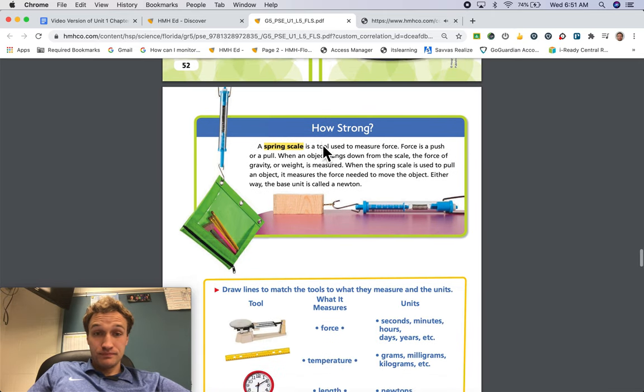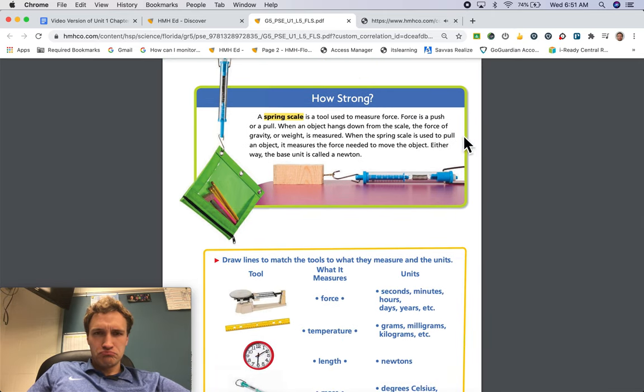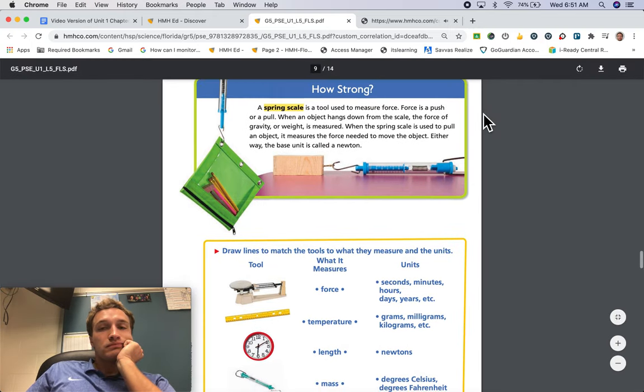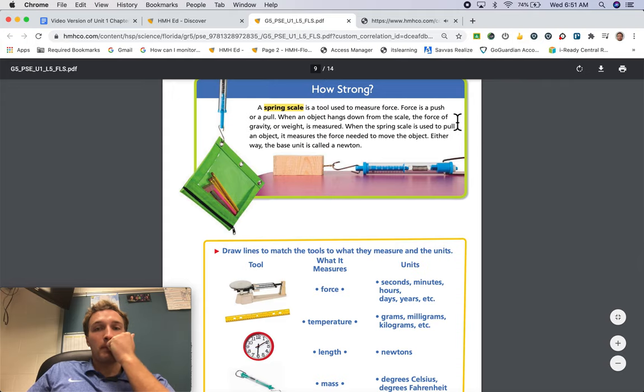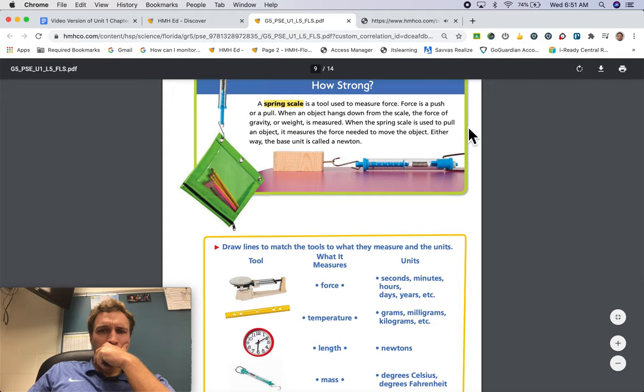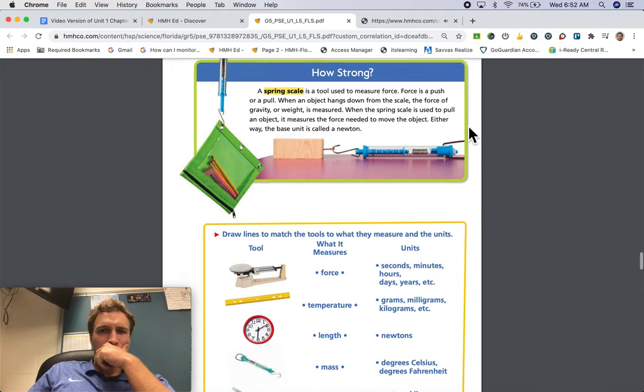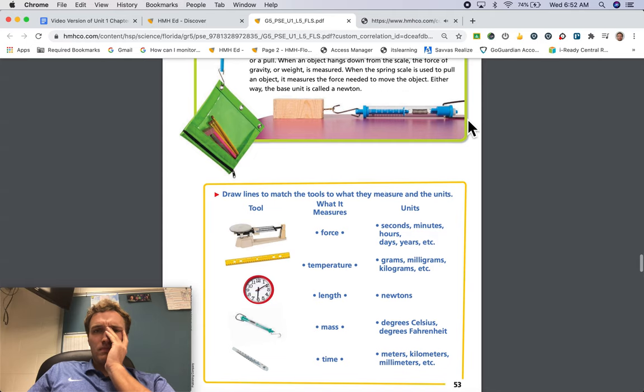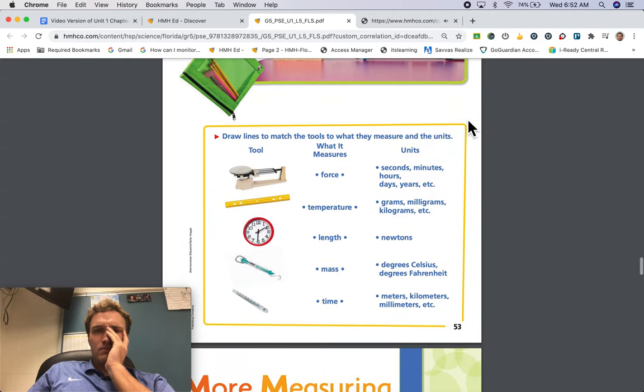How strong. A spring scale is a tool used to measure force. Force is a push or a pull. When an object hangs down from the scale, the force of gravity, or weight, is measured. When the spring scale is used to pull an object, it measures the force needed to move the object. Either way, the base unit is called a newton.